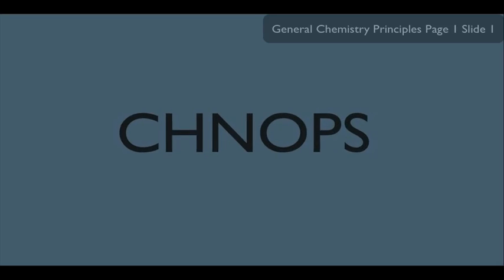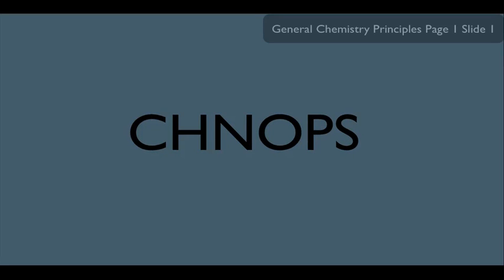First of all, organic chemistry studies something called CHNOPS. These are simply the atoms most often studied in organic chemistry: carbon, hydrogen, nitrogen, oxygen, phosphorus, and sulfur.